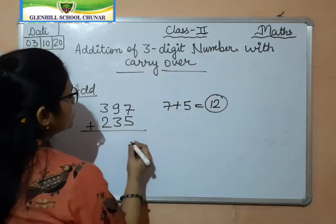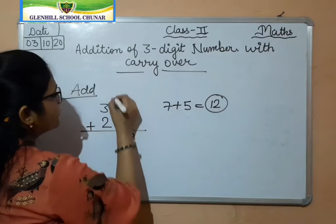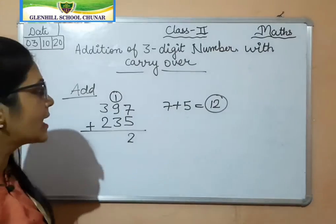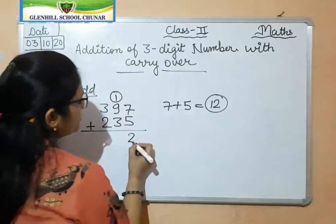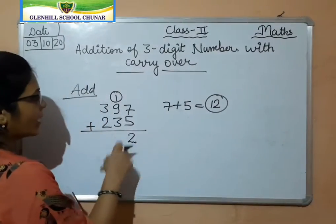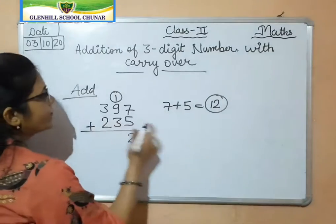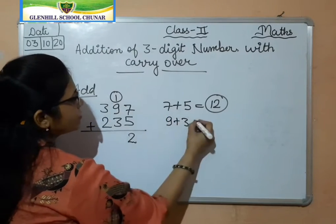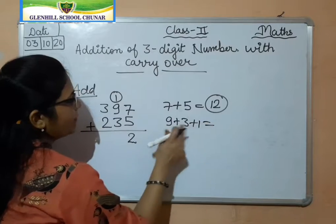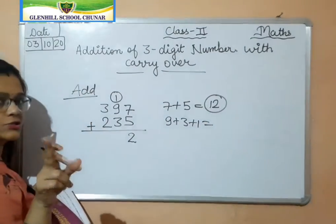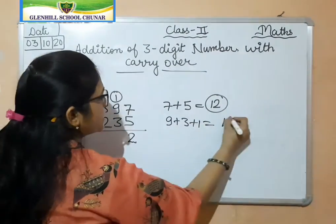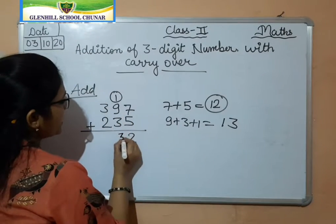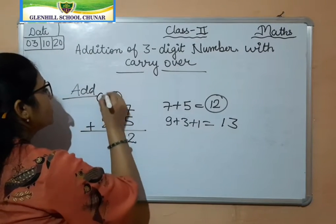7 plus 5 is 12. So I have written 2 here and 1 will carry over to the tens place. Now see, 9 plus 3, and the carry 1 is also there. So 9 plus 3 is 12, and 12 plus 1 is 13. So I have written 3 and 1 again will carry over.